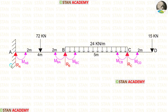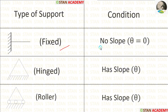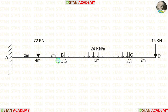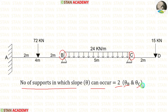We also have to find 3 reactions: RA, RB, and RC. In the slope deflection method, we check the number of supports where slope can occur. In a fixed support there is no slope, while in hinged and roller supports there will be slope. In this beam, points B and C have hinged supports, so the number of unknowns is 2: theta B and theta C.